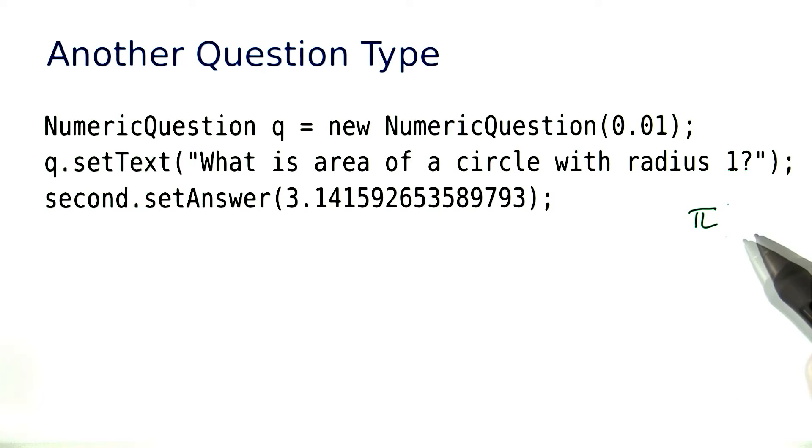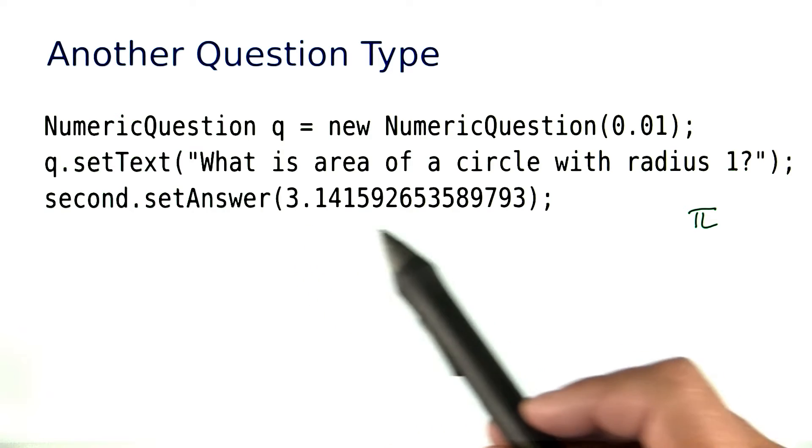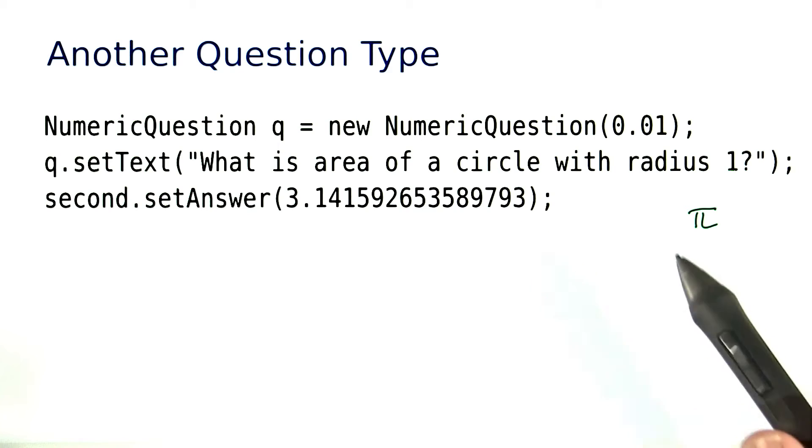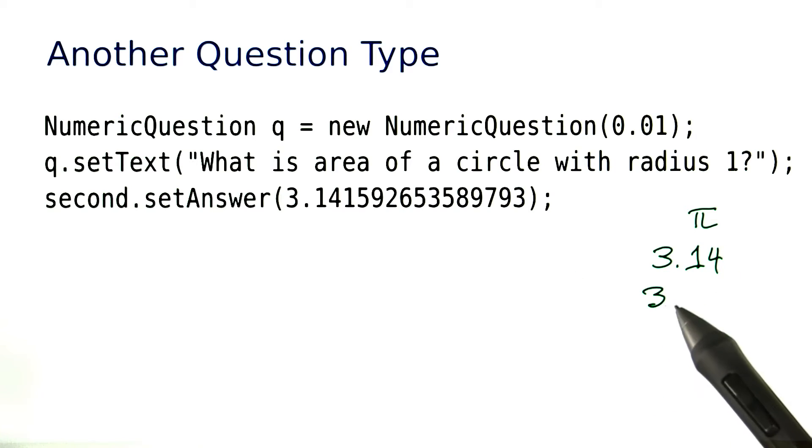Well, that might be hard to enter. We can't really expect the user to type in the exact value of pi. As you know, this is not even the exact value either—it goes on forever. We just want the user to be able to enter, say, 3.14 or 3.14159, depending on how well they remember those digits.